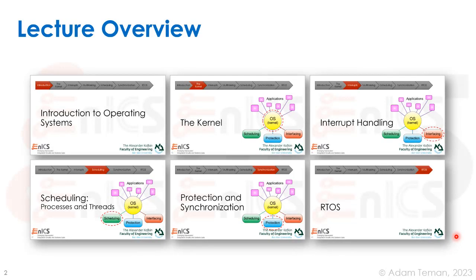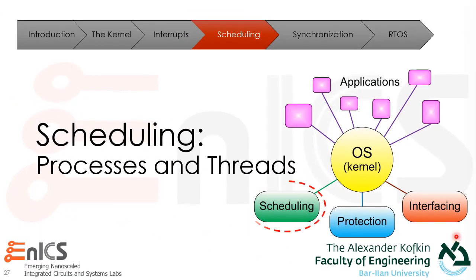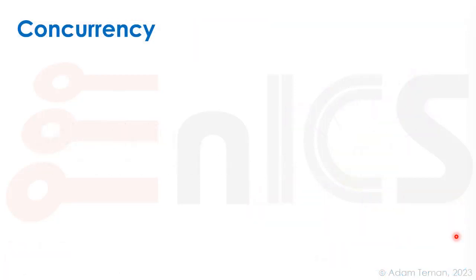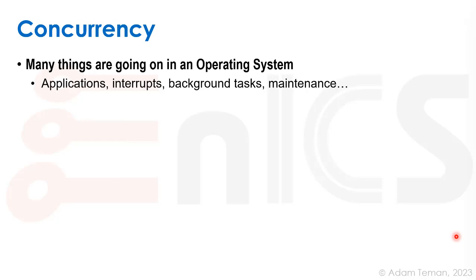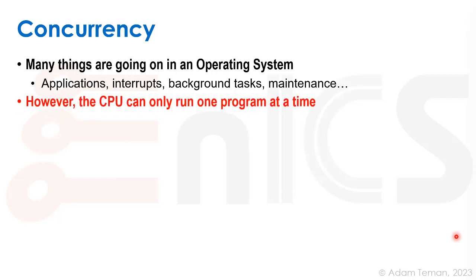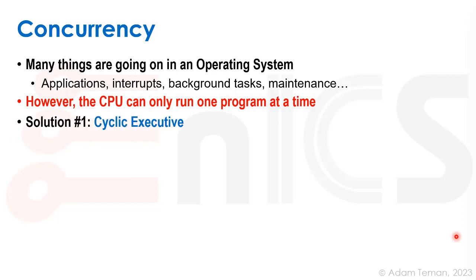Getting back to the core functionalities of the operating system, let's move over to scheduling, which also involves multi-processing, processes, and threads. Let's start with the concept of concurrency. Many things are going on in an operating system: applications, interrupts, background tasks, maintenance, and so forth. However, the CPU can only run one program at a time. The first solution is what we call a cyclic executive.